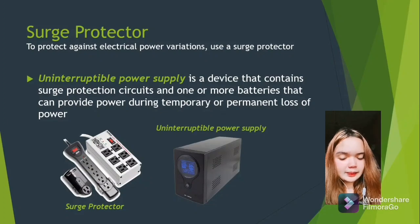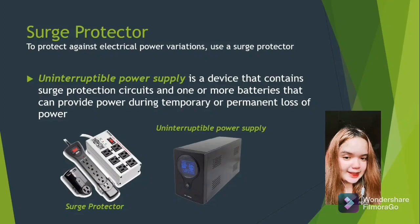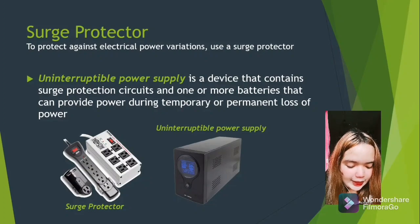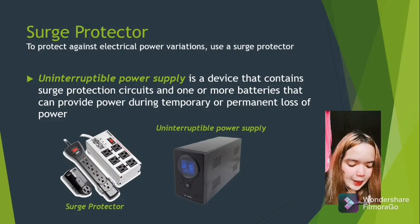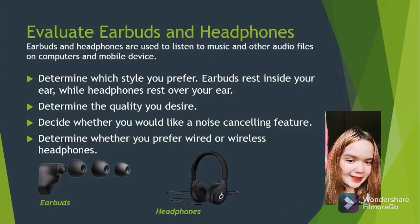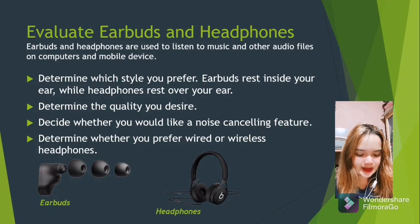An uninterruptible power supply (UPS) is a device that contains surge protection circuits and one or more batteries — a device used to provide a backup supply of electricity to prevent devices or systems from being affected by power supply problems.